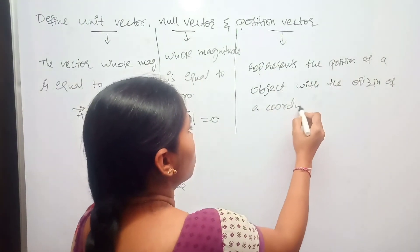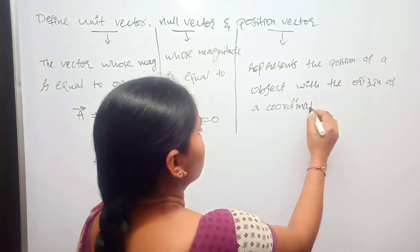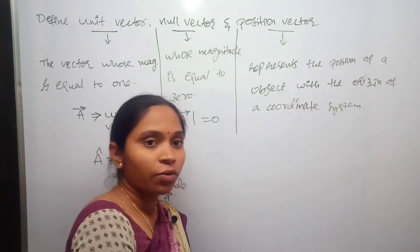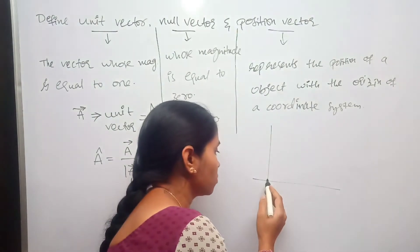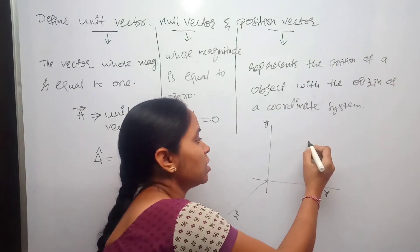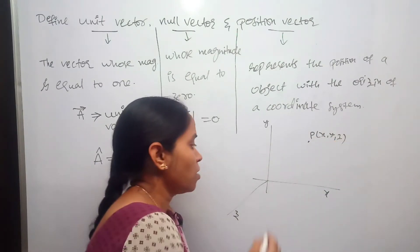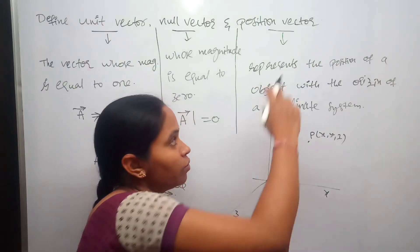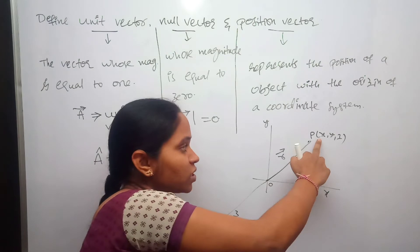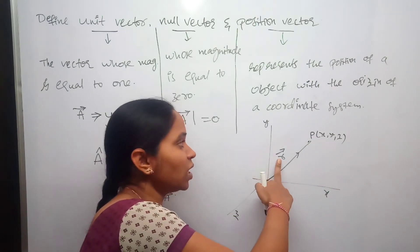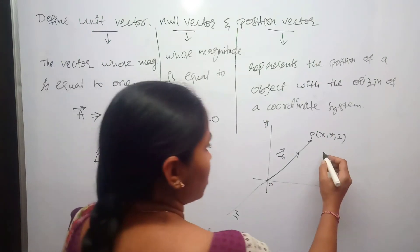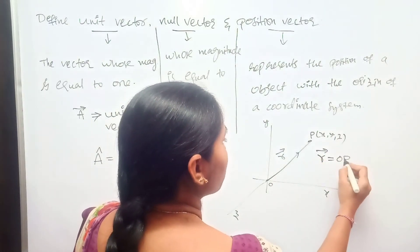Coming to the position vector: the position vector represents the position of an object with respect to the origin of a coordinate system. If we have an XYZ coordinate system and the object is at point P from the origin, then R-bar is the position vector of this object, giving the position of the object from the origin.